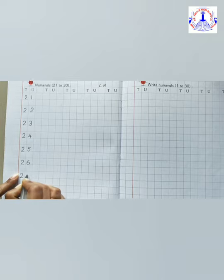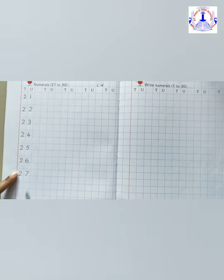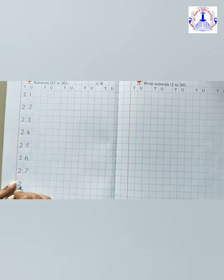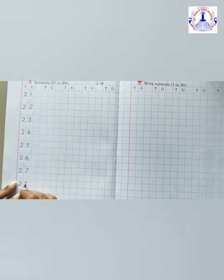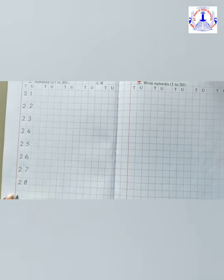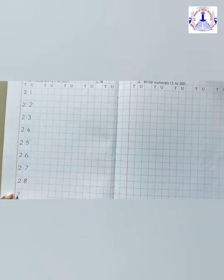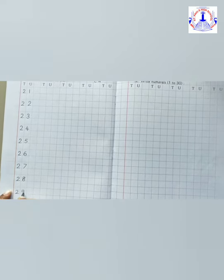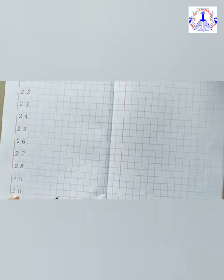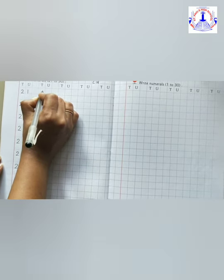After number 26, 27. Leave one box. After number 27, 28. After 28, 29. And after number 29, 30. Now coming to the next line.